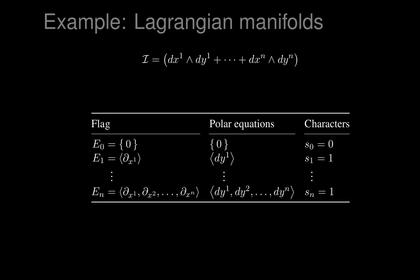Now let's look at the characters. S_0 is the dimension of polar equations of E_0, which is zero-dimensional, so S_0 = 0. At each subsequent step, we add one new dy as a generator of polar equations, so we add one dimension at each step. Therefore S_1, S_2, ..., S_n are all equal to one. We can plug these into the formula for predicted dimension — I'll leave you to check the details — and get a simple expression we can calculate out.